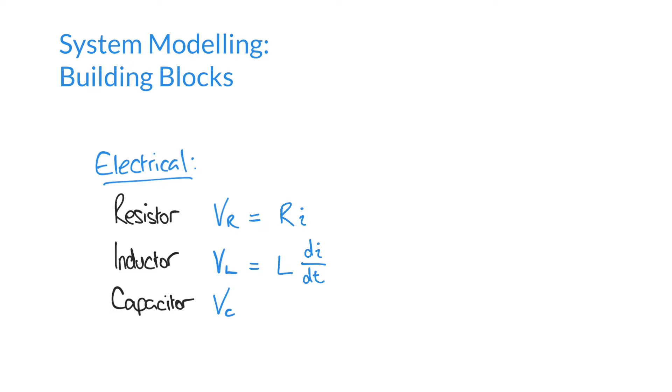For a capacitor, we have Vc, the voltage across the capacitor, is equal to 1 over C, multiplied by the integral of current with respect to time.